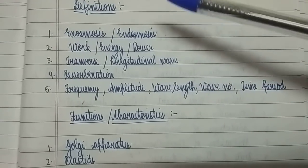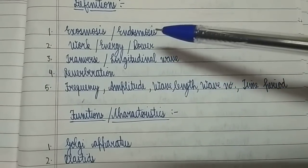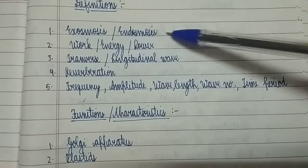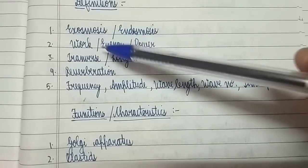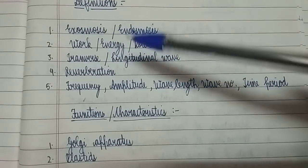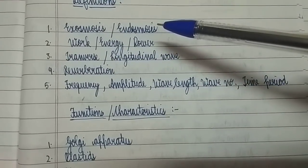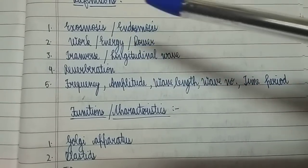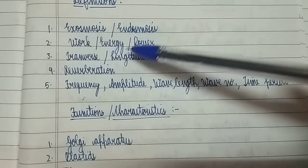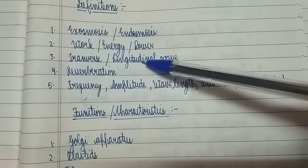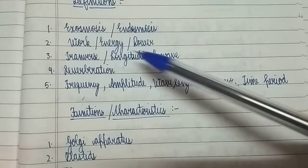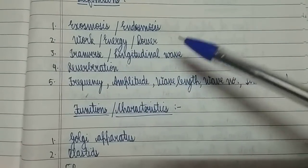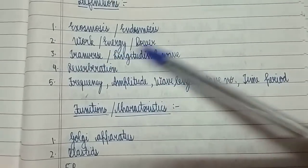Definitions are also an essential part of the science exam. You have exo-osmosis and endo-osmosis — these two definitions are for two marks. Work, energy, or power — you need to know the definitions as well as their units, which can be asked for one mark. Transverse or longitudinal waves — you can also be asked the difference, and they're very important for definitions.